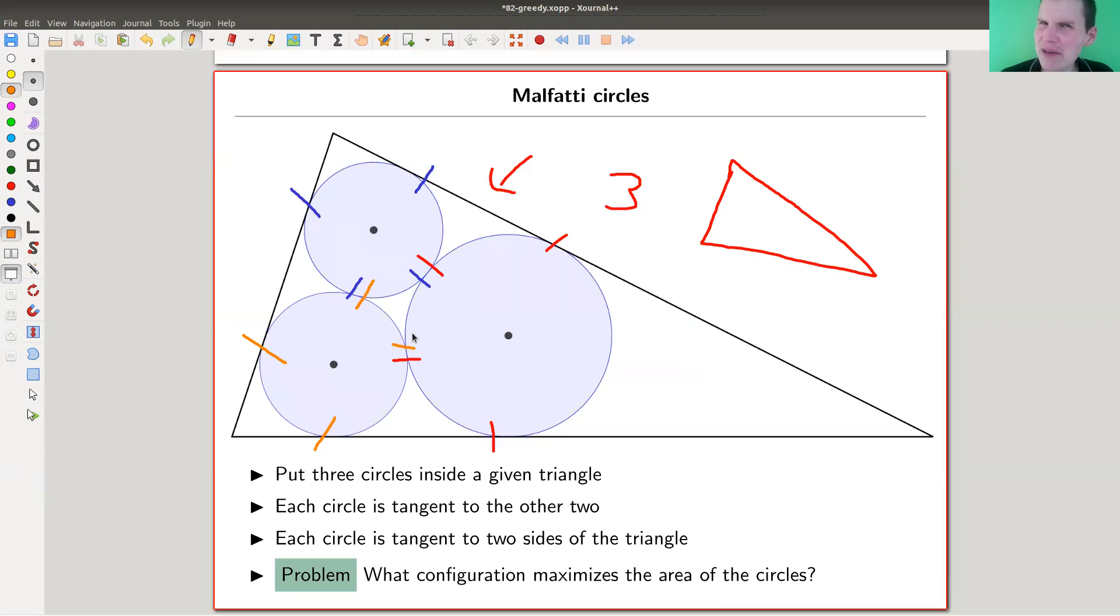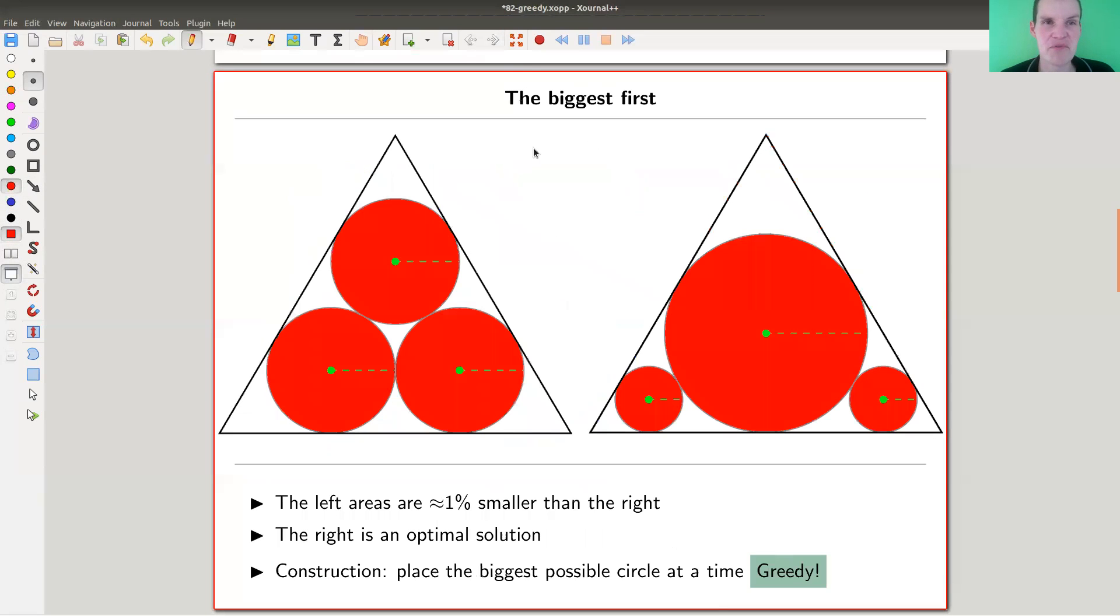Turns out that this is not a completely trivial problem. Maybe I give you a few seconds to think about what happens if you take the equilateral triangle. So what could you do in the equilateral triangle case here? Maybe you just put three circles inside of the same radius that fit very nicely into this triangle. But it turns out that this solution is not optimal. There's a better one, the one on the right.